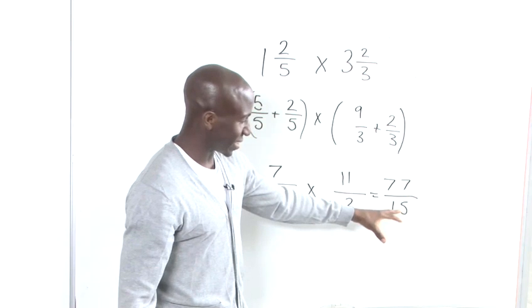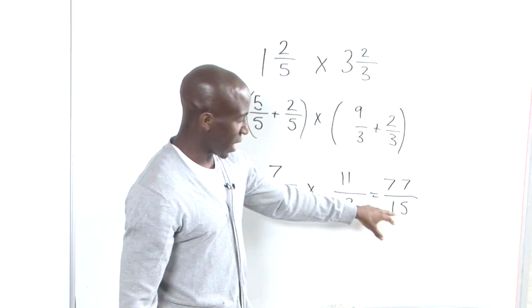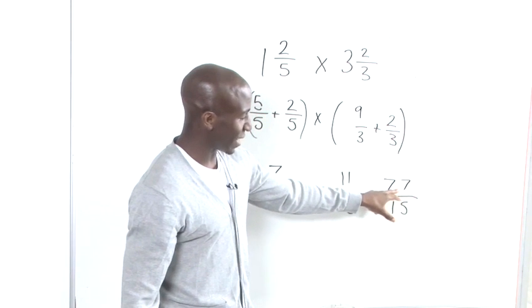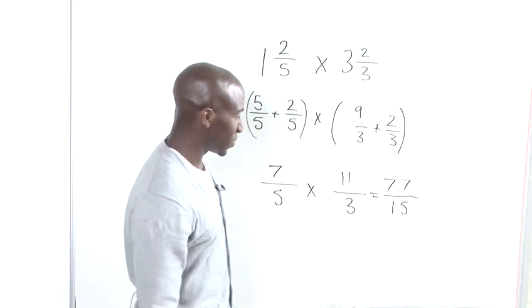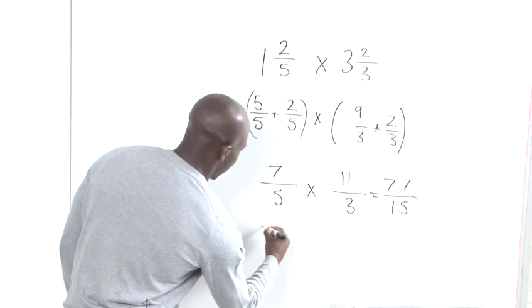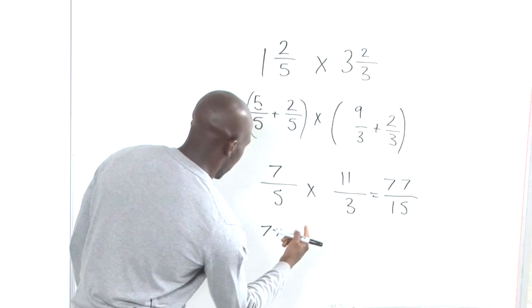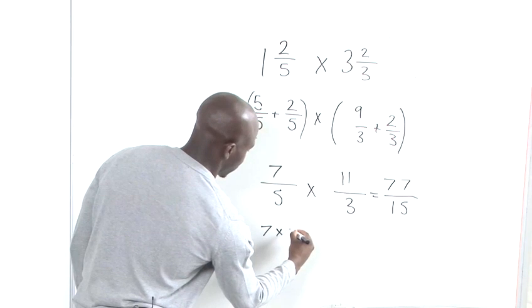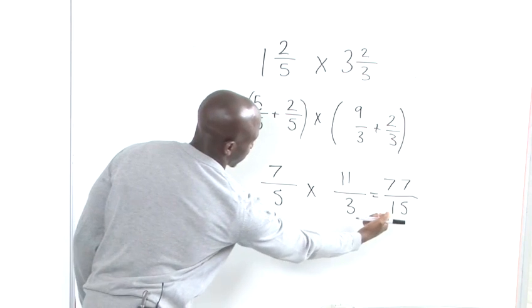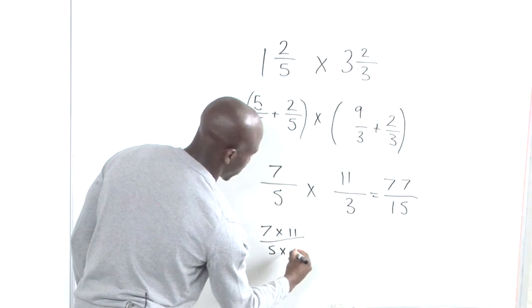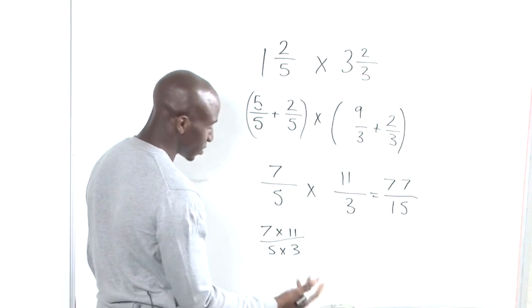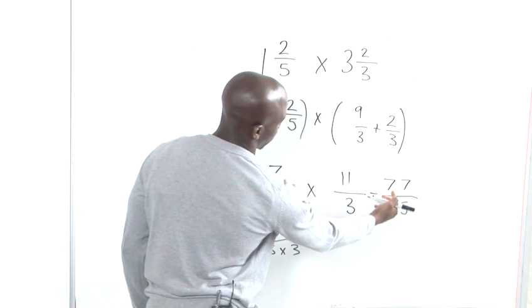We would want to see if we can cancel anything out or possibly factorize. So if we think about what 77 looks like, it is basically 7 times 11, which is its prime factors. And if we look at these two, they're the prime factors of 15. So we can see that there's no chance of actually canceling down. So we have to leave it like this as an improper fraction.